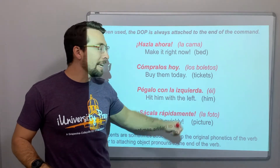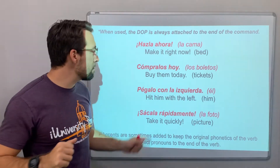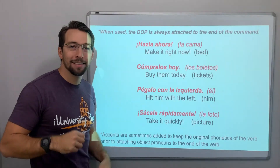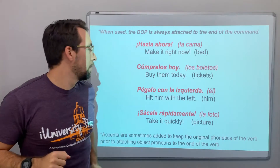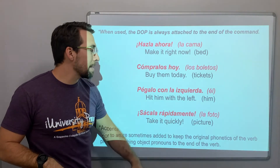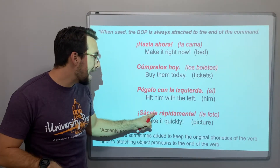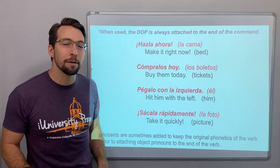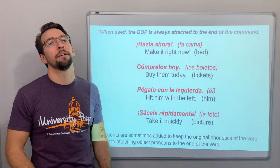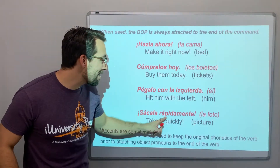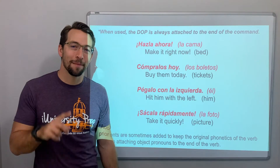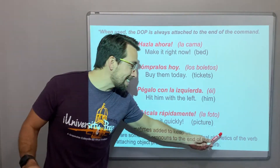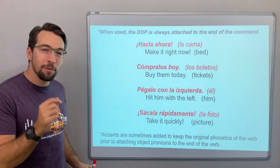Pégalo con la izquierda — maybe you're a boxing coach. Hit him with the left. Who am I hitting? Him. Pégalo. Sacala rápidamente — la foto — take it quickly. Has anybody ever been with your family and the photographer doesn't know how to push the button? Take it quickly. Sacala rápidamente.